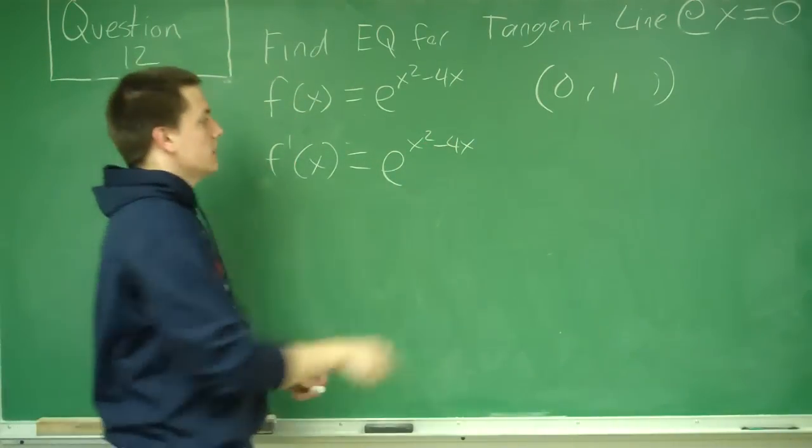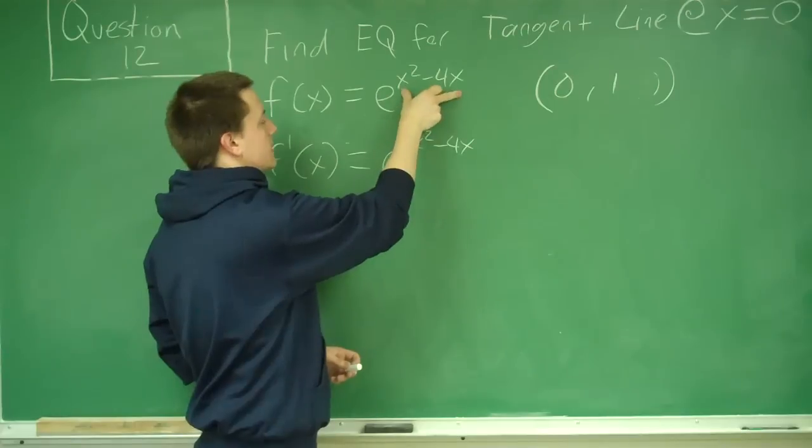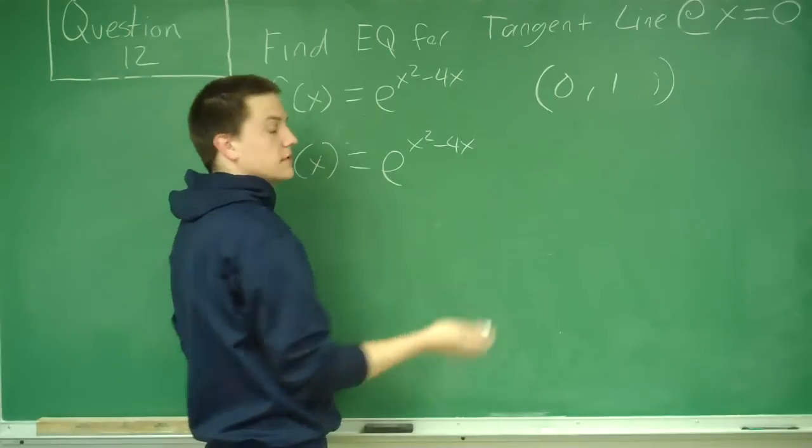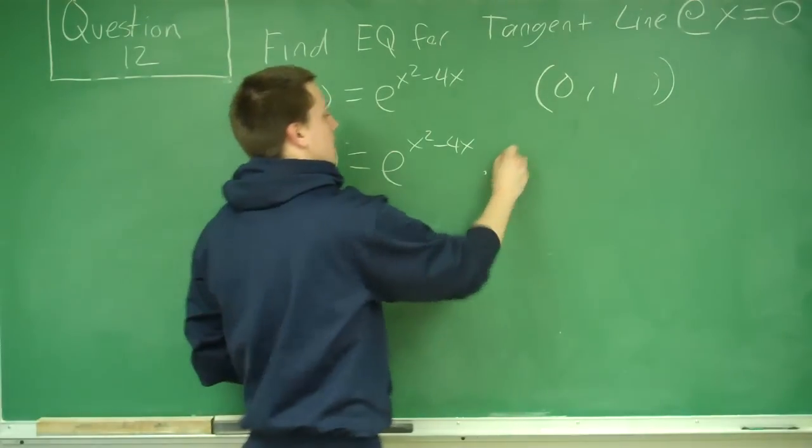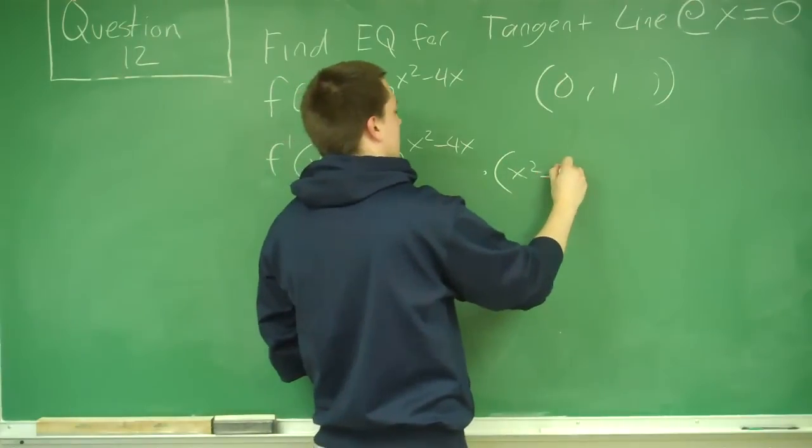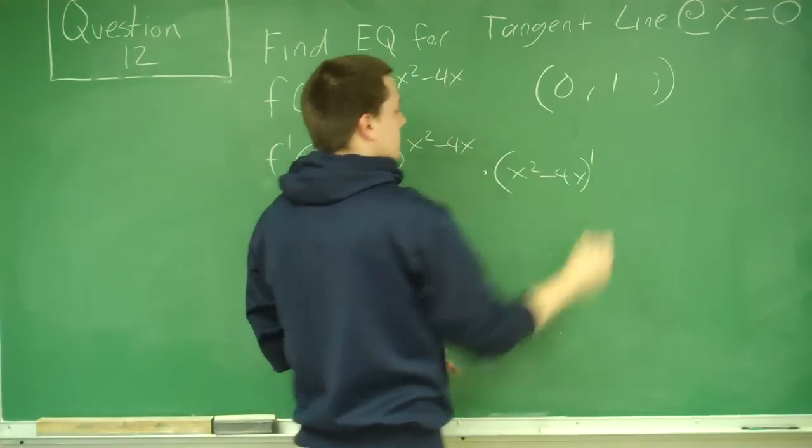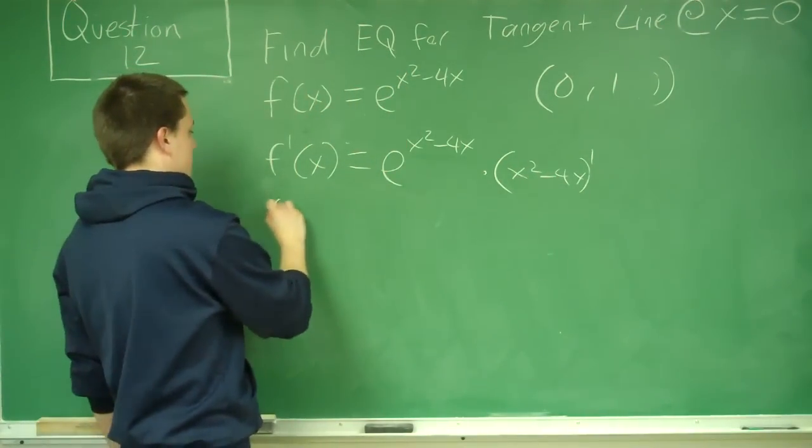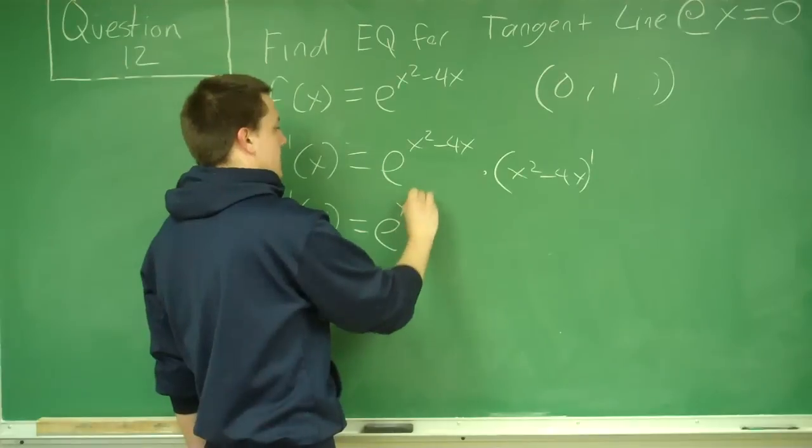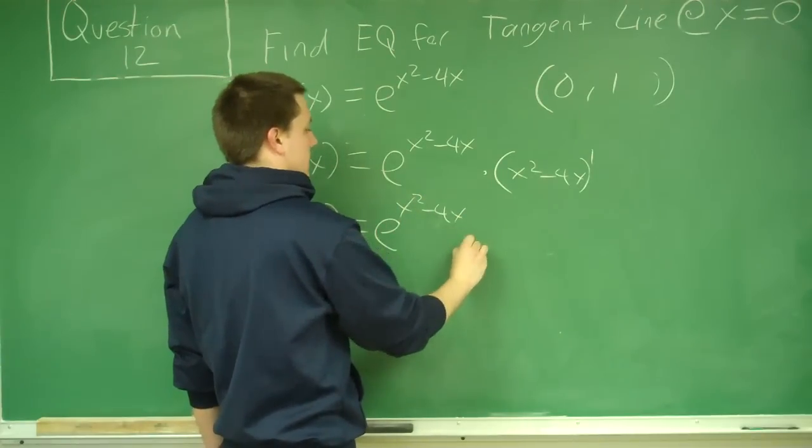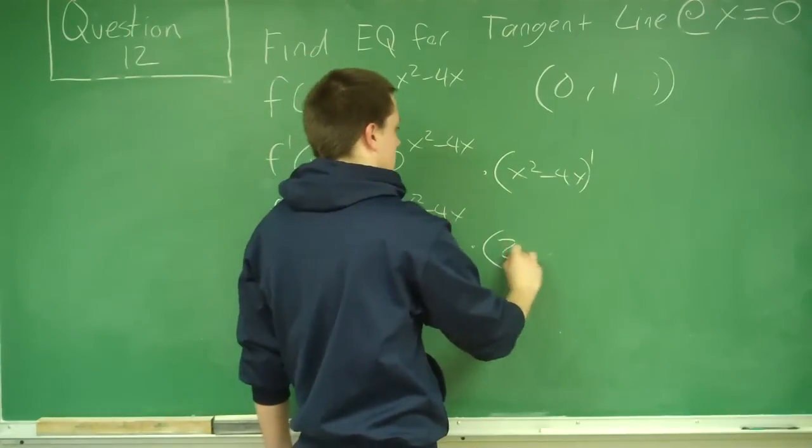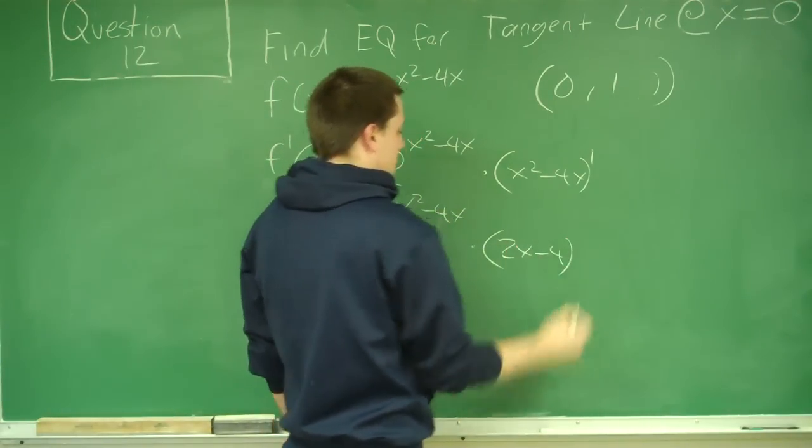Now the only difference is what we had in the exponent was not just x, it was a function of x. So what we have to do now is multiply by the derivative of the inside. The inside function was x squared minus 4x, so we have to find that derivative. So f prime of x equals e to the x squared minus 4x times the derivative of this. The derivative of x squared is just 2x minus 4.